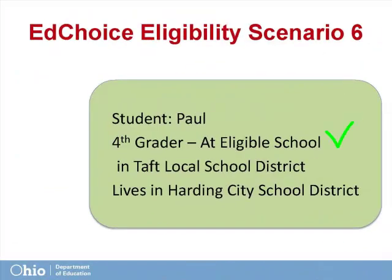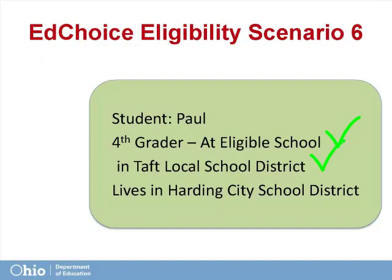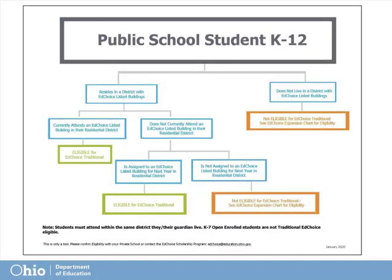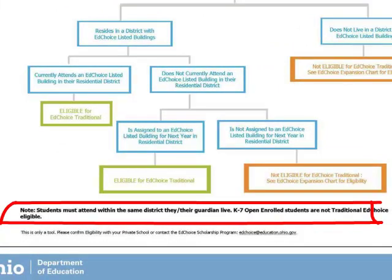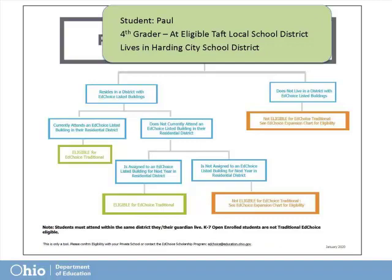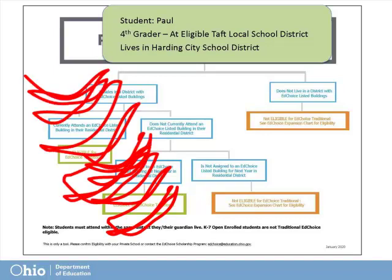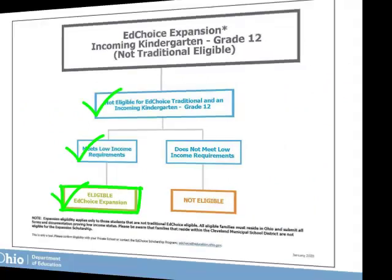Our next example is Paul, a 4th grade student currently attending an EdChoice listed building within Taft Local School District. However, Paul and his family live in the Harding City School District. Is Paul eligible because he attends an eligible building? No. As noted on the public school chart, students applying for the scholarship must attend within their resident district. Paul resides in Harding City School District but has chosen to attend an eligible building in Taft Local. Because Paul is not a resident of the district of the eligible building he attends, he is not eligible for the traditional EdChoice scholarship. Instead, Paul could only be expansion eligible if his family meets low income qualifications.